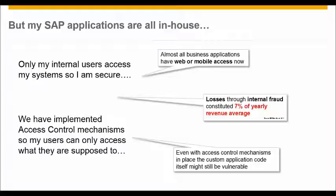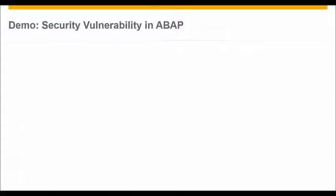Internal fraud — unfortunately — was around 7% as of 2011 and is currently growing. And this doesn't have to be intentional; it can happen just by accident, someone pushing the wrong button or typing something unintended. So we have revenue impact from an internal fraud perspective too.